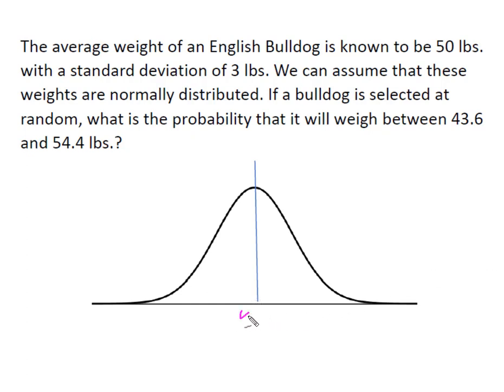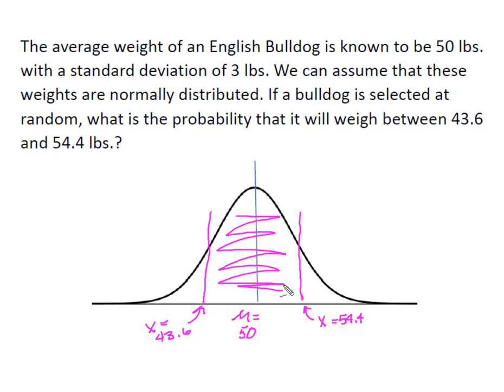Down here we have our mean of 50 and now we have two values of X. Up top you have a value of X equal to 54.4 pounds and down here on the left we have a value of X equal to 43.6 pounds, and what we want is the area in between.